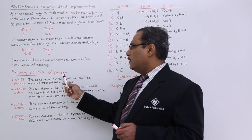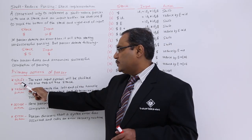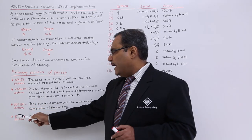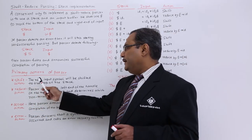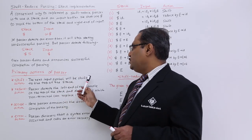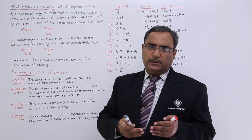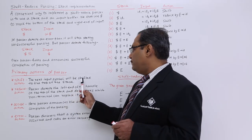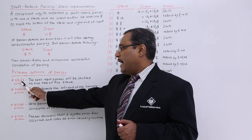The primary actions of the parser — the parser can perform four actions: shift, reduce, accept, and error. In case of shift, the next input symbol terminal to which the pointer is pointing will be shifted to the top of the stack. We can insert only at the top of the stack, so it will be pushed and shifted to the top of the stack — that is the shift action.